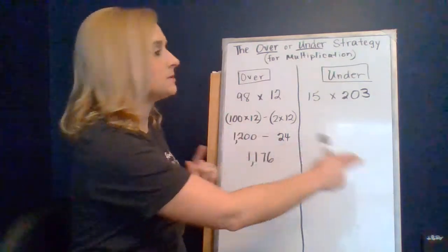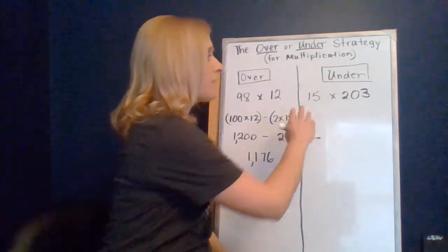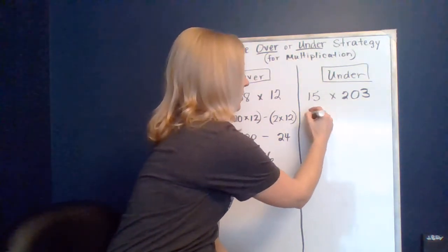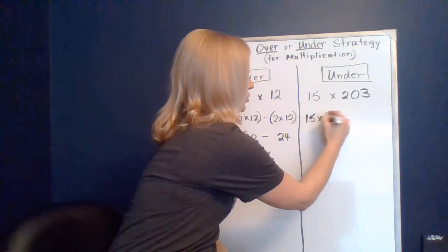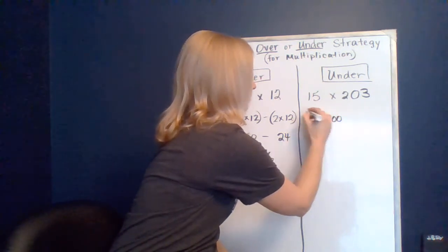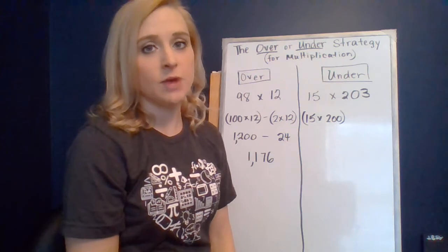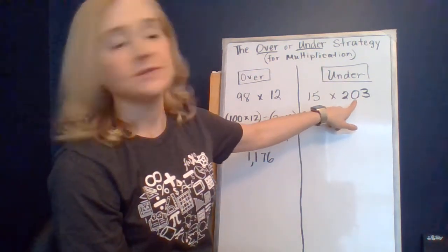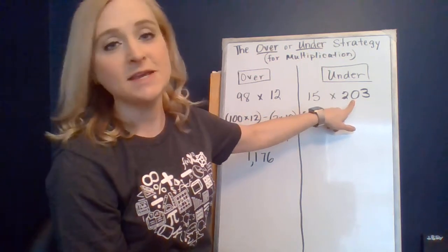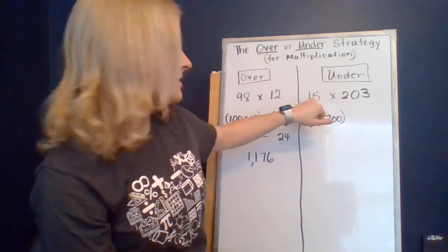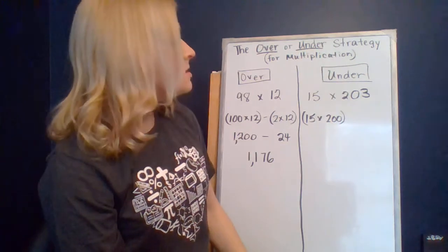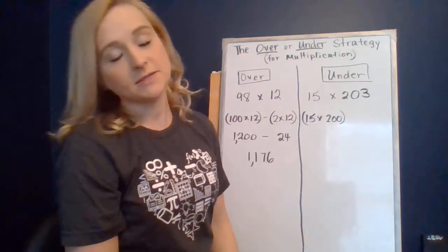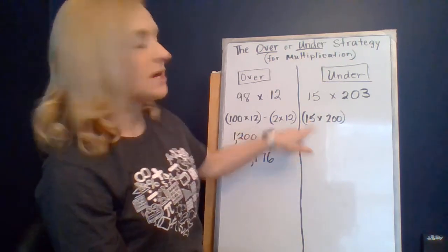If I want to do this strategy, then I'm going to probably think about 15 times 200 first. Easter's coming up. I have 203 Easter baskets and each Easter basket has 15 eggs. How many eggs are there in all? So if I figure out how many eggs are in 200 baskets first, what's 200 times 15?